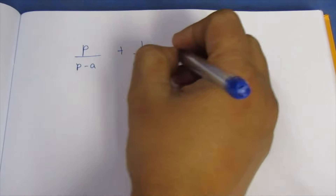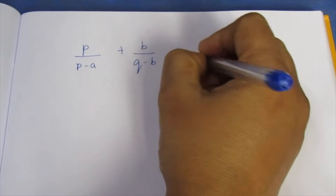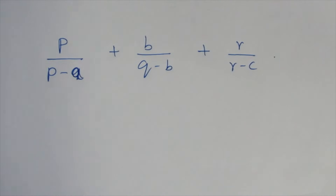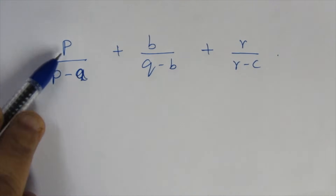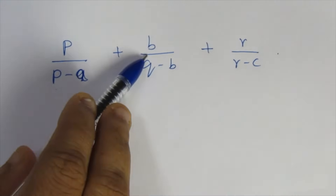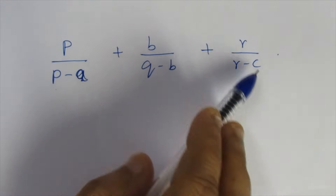Now we write out the full expression: P/(P-A) + Q/(Q-B) + R/(R-C). Let's explain this clearly and simplify further.